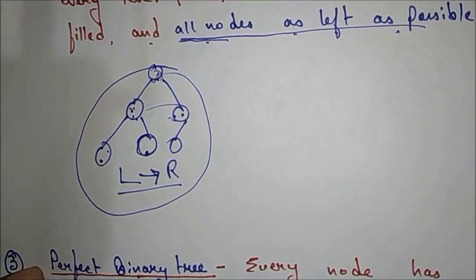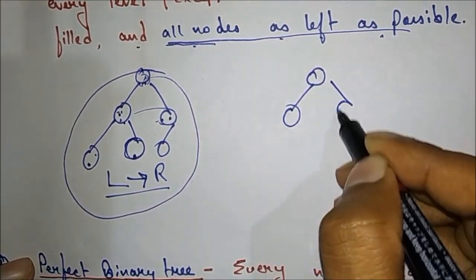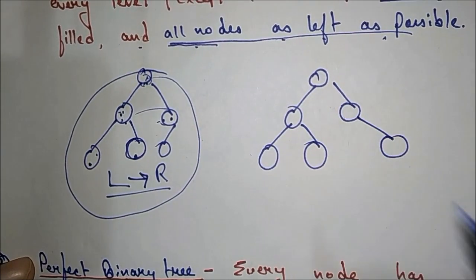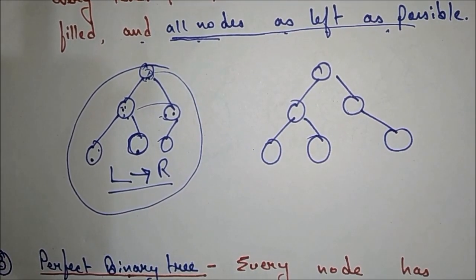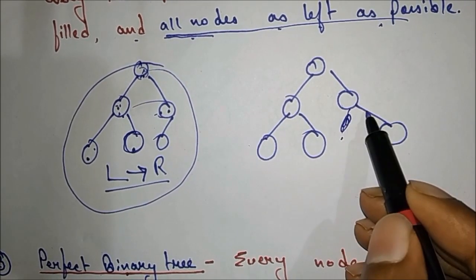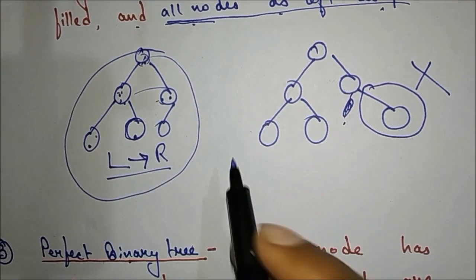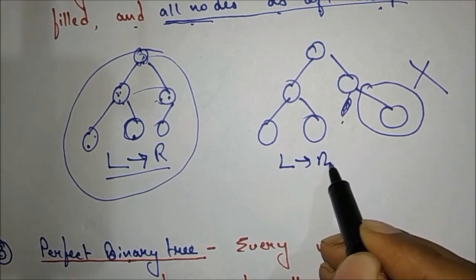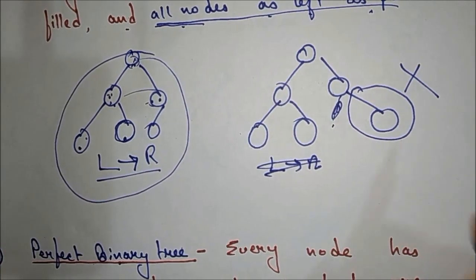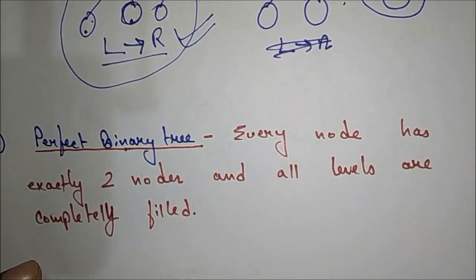Now see this is another tree. Is this a complete binary tree? No, it is not, because we have to fill the left node first but here we are filling the right node. Our condition is we have to fill from left to right, but here we are filling the right node first, so this is not a complete binary tree.